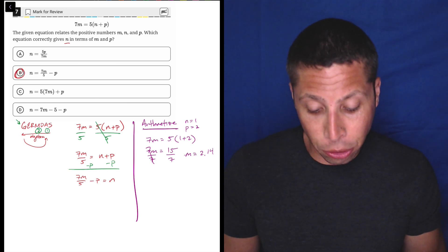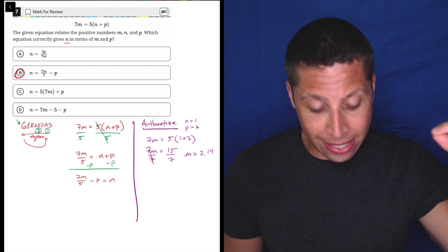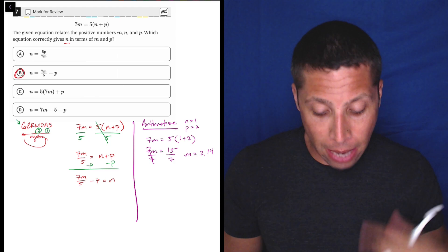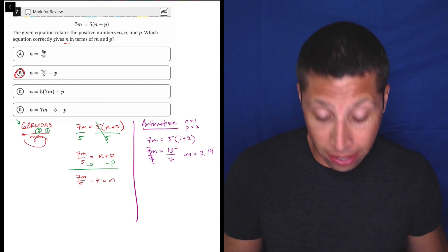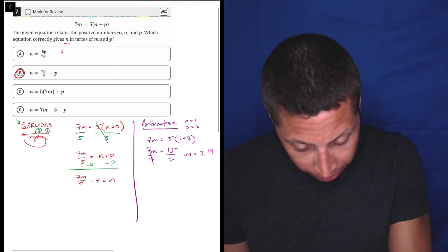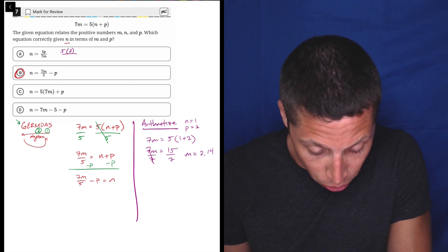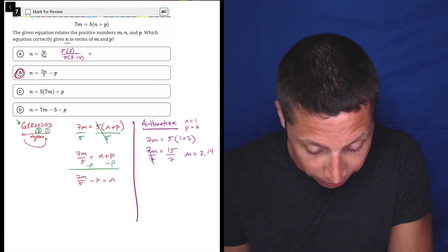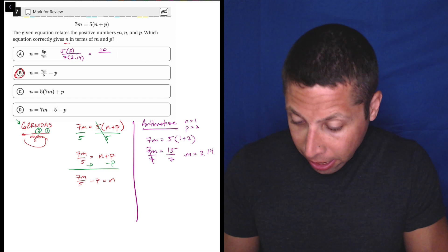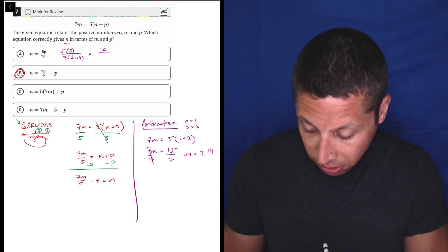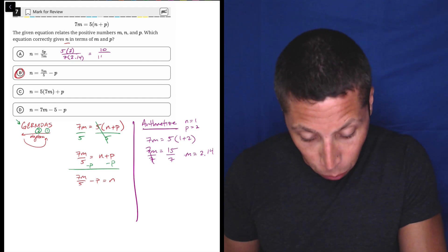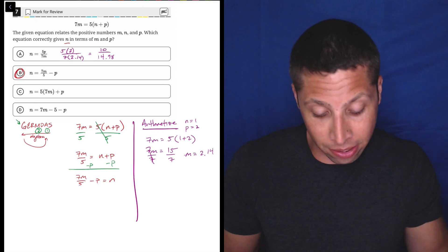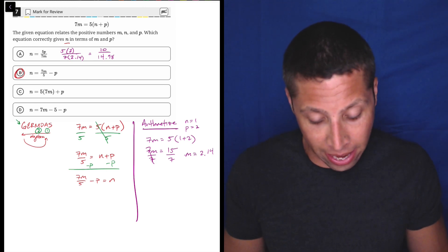So now what do I do? I go to all the answer choices, and I know that n is supposed to be 1. So I'm plugging in the 2 for my p, I'm plugging in this 2.14 for m, and I'm seeing which one gives me the n that I'm looking for. So if I go to choice A, right, that's going to be 5 times, we said p is 2, and m, we're just rounding to this 2.14, so it might not be perfectly accurate, but that's 10 divided by 2.14 times 7, which is 14.98. And I just know, without even doing any more math, that's not going to be equal to 1, right, because 10 over 10 would be 1, not 10 over 14.98.